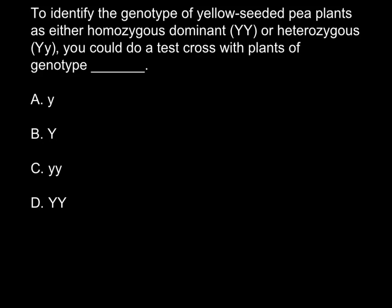Before I start, I want to cross out two incorrect answers: A and B. We can do this right away because our question is about a diploid plant — you can see two versions of the same gene, which can be capital YY or capital Y and small y. Answers A and B offer us only haploid plants, so we can cross them out immediately.